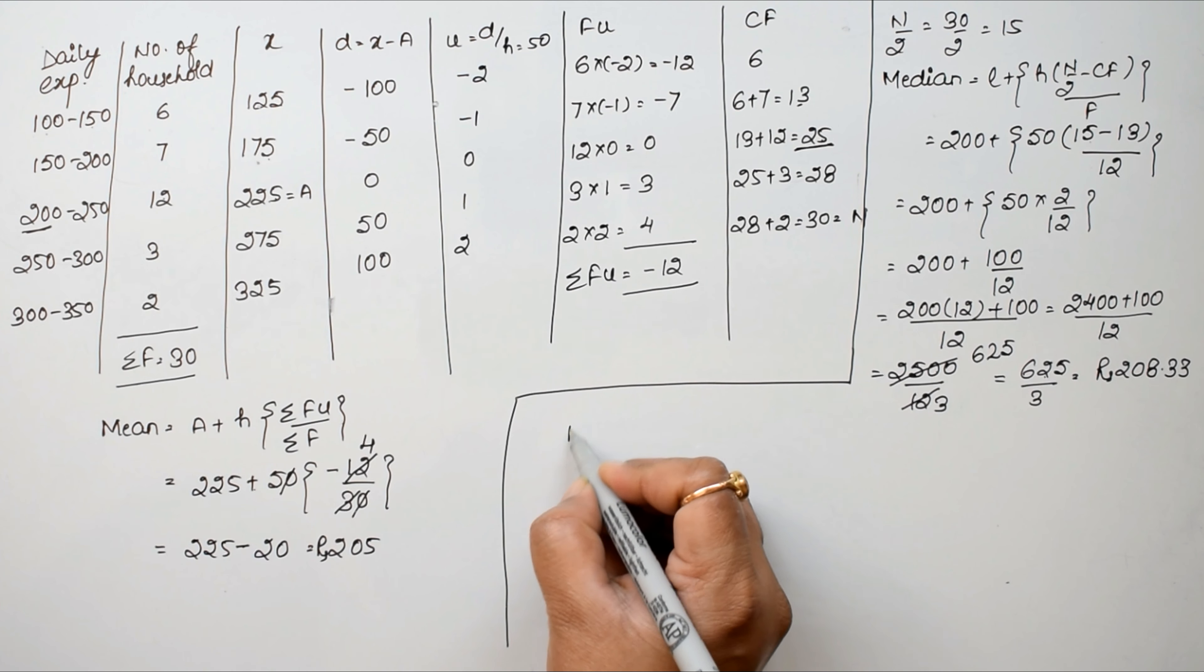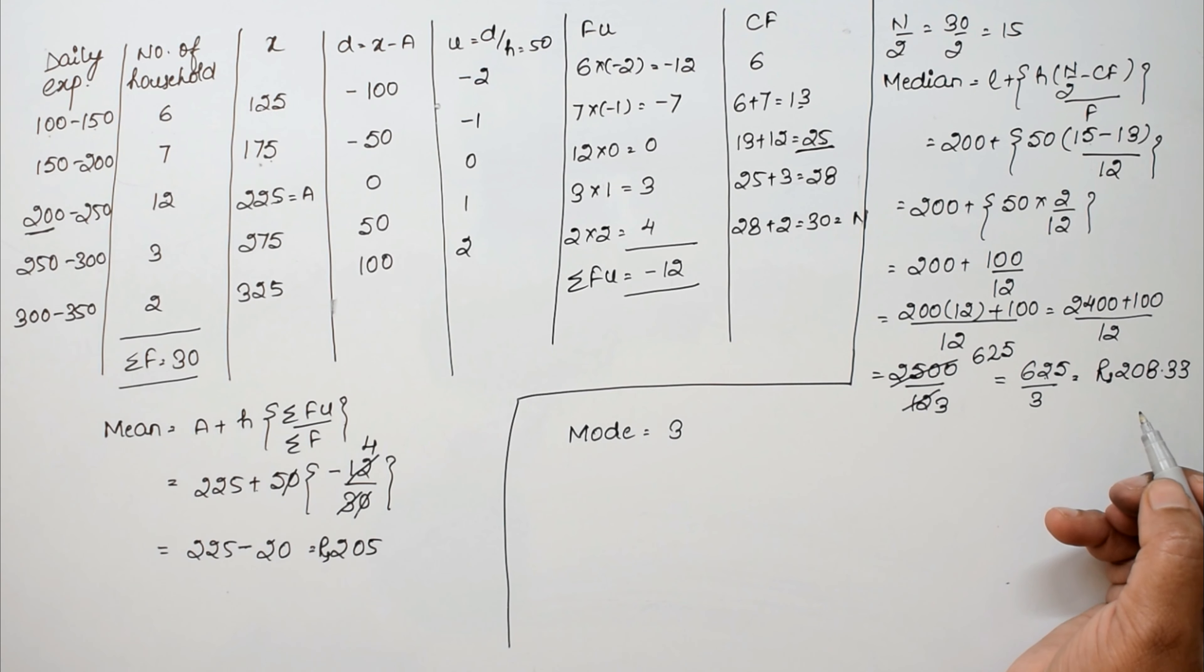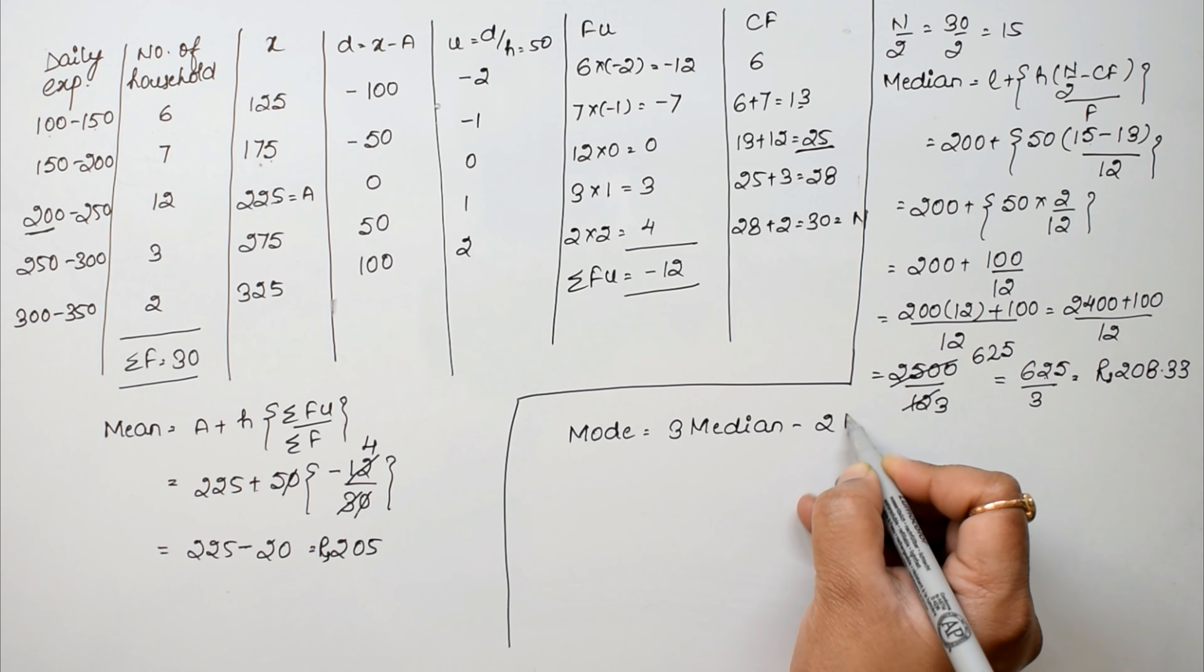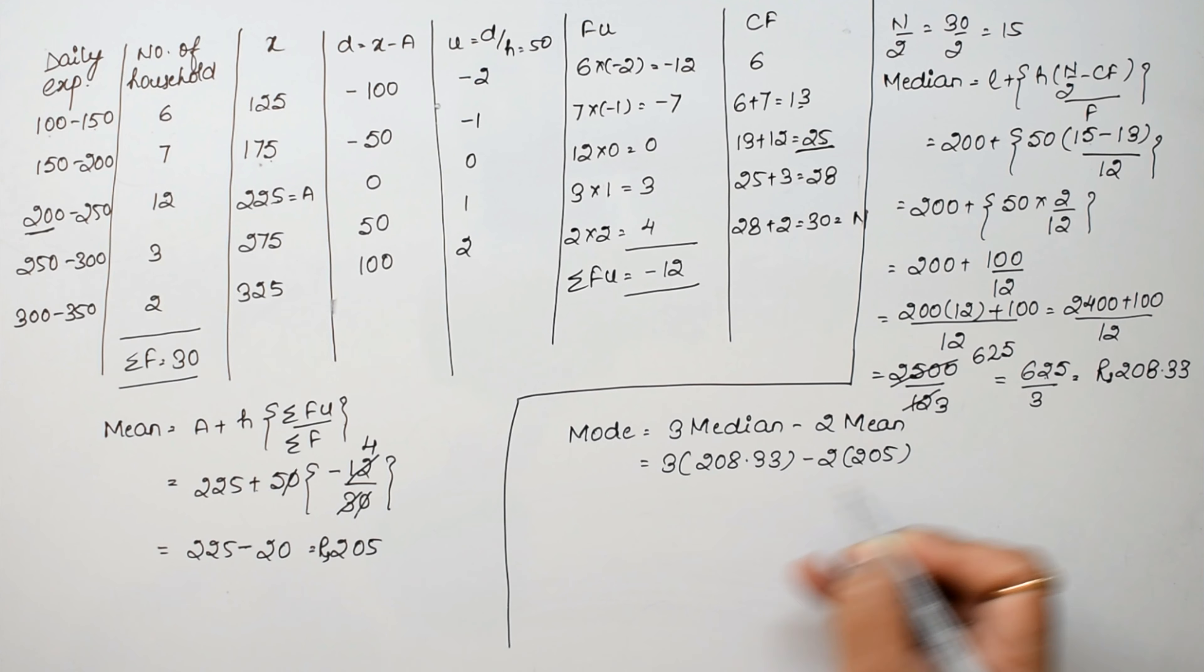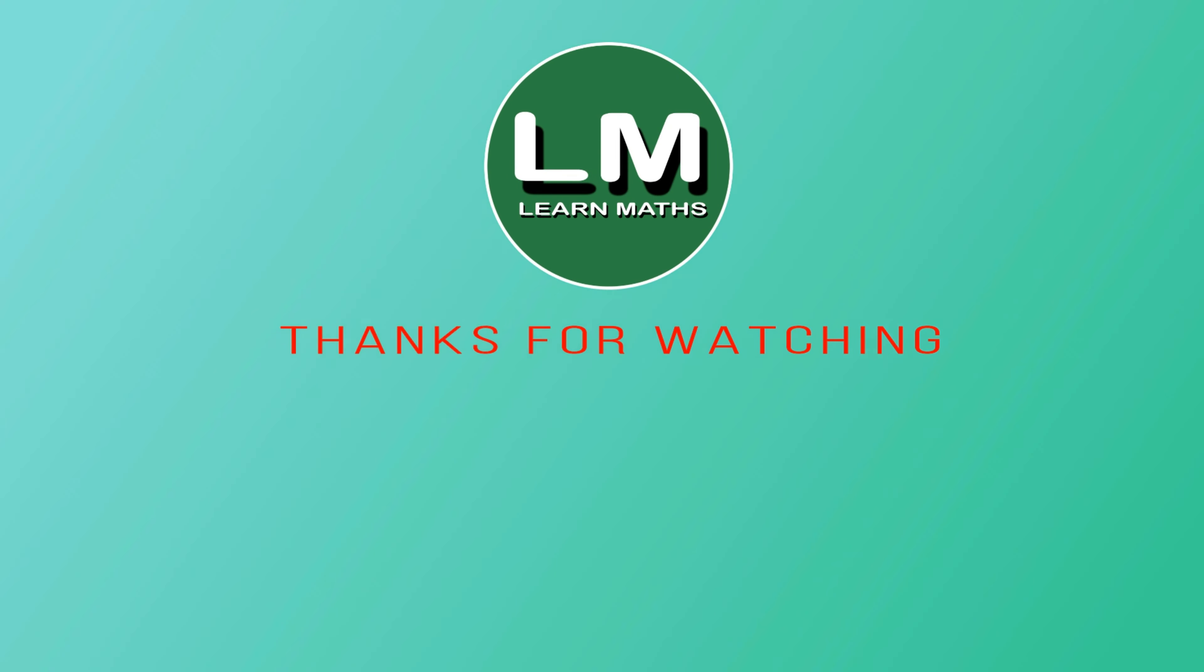Now for mode, we use the formula: mode equals 3 times median minus 2 times mean. So 3 times 208.33 minus 2 times 205. This is 624.99 minus 410, which equals 214.99 rupees. This is the answer for mode.